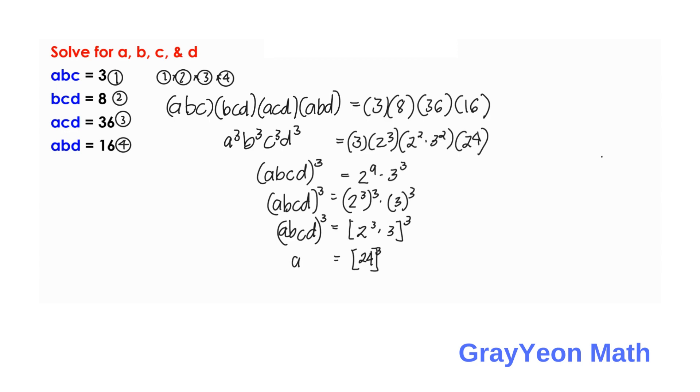So, cube and abcd is cubed. If we take the cube root of both sides, the cube and the cube root cancels up. So, we simply say that abcd is equal to 24.